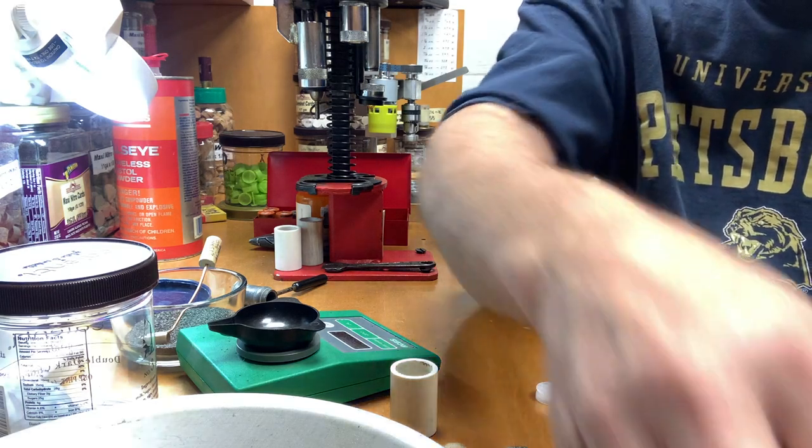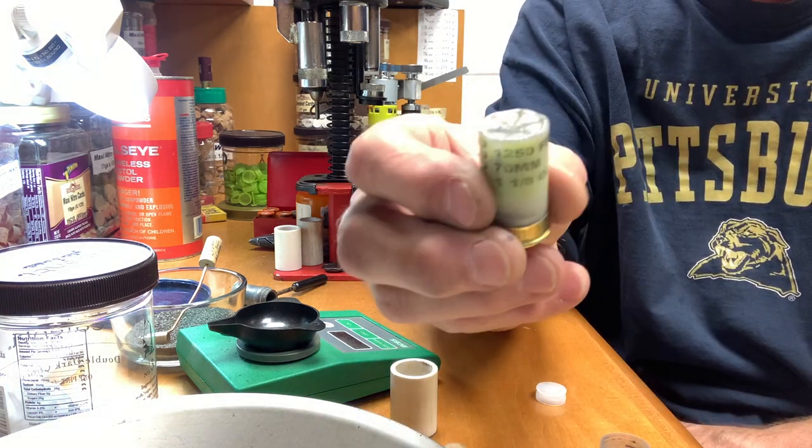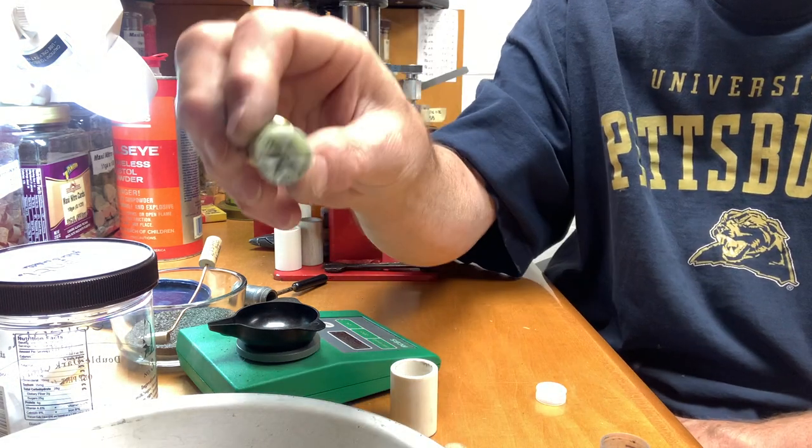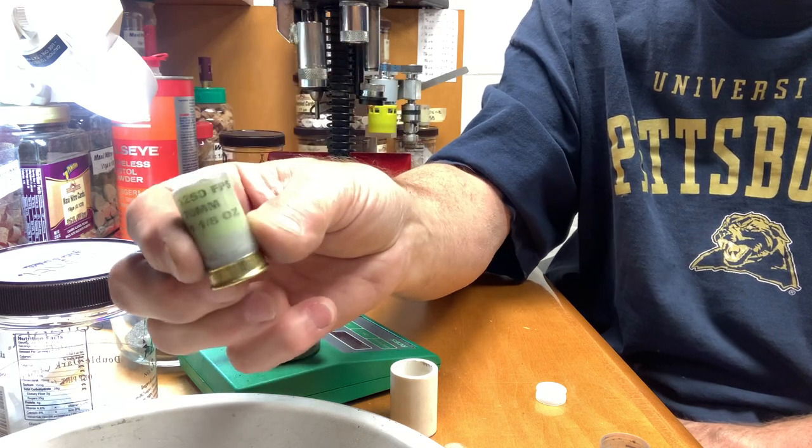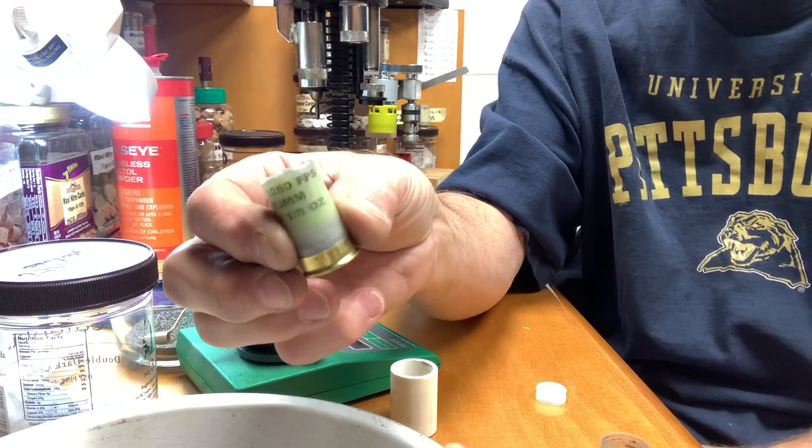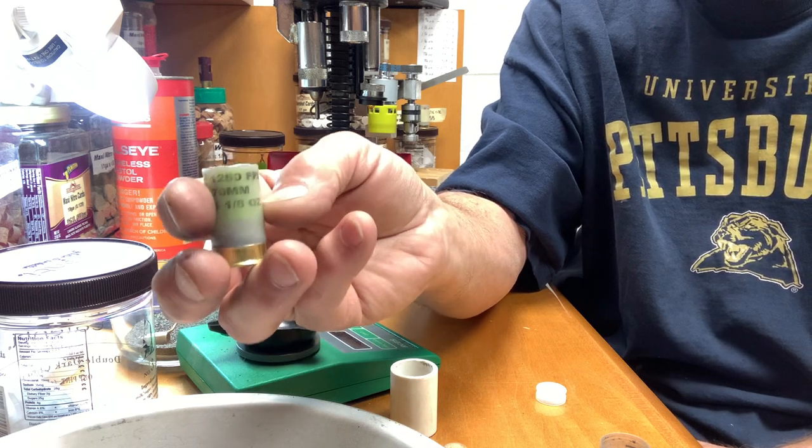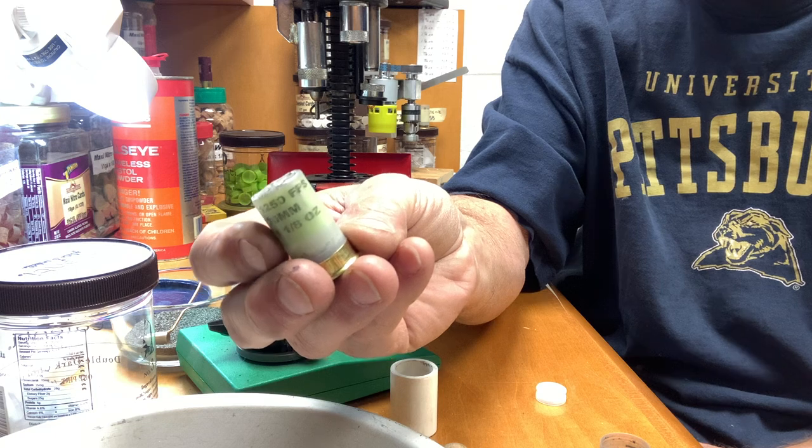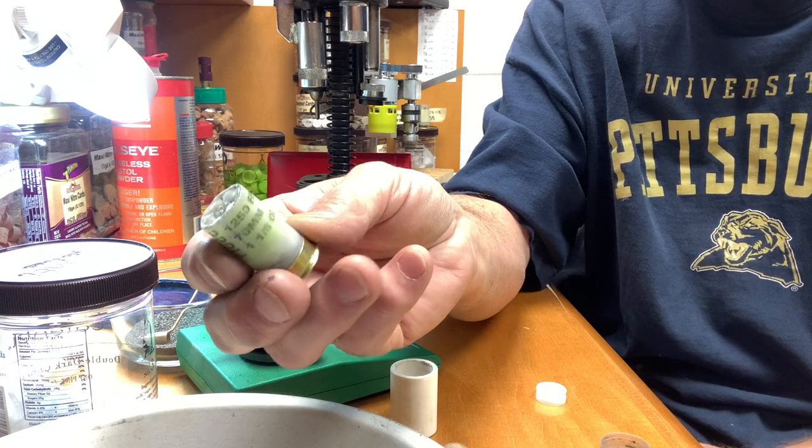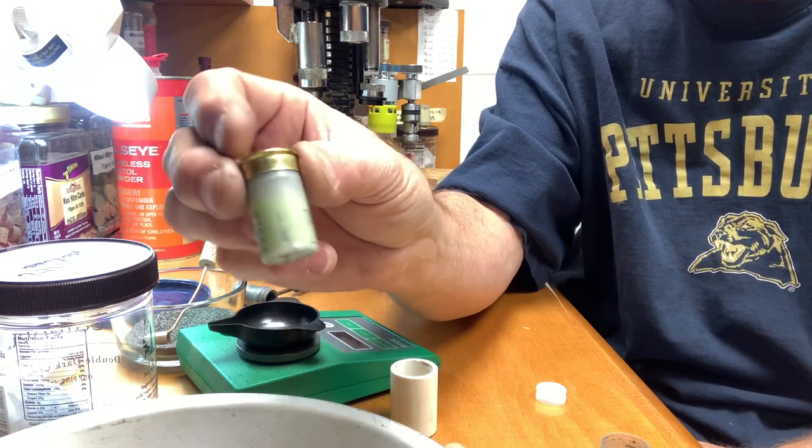So now I can do this: I could put a roll crimp on it. This is a BB load. And then I looked at the Aguila loads and they don't have a shot cup inside there either.